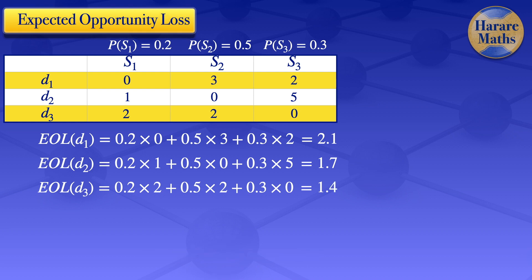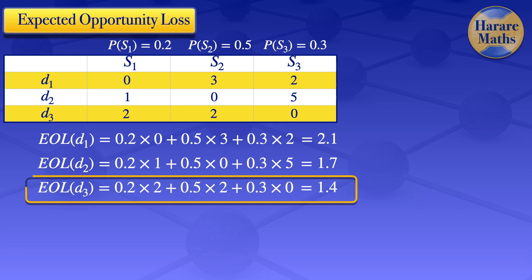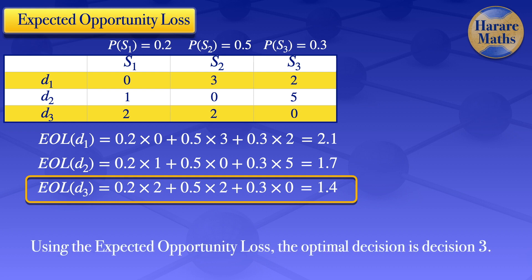To see which decision we have to choose, we look at the decision which has the lowest expected opportunity loss. In this case, the one with the lowest expected opportunity loss is decision number 3. Therefore, using the expected opportunity loss decision criterion, the optimal decision is decision number 3.